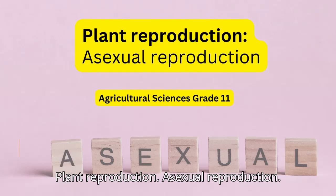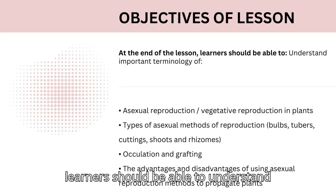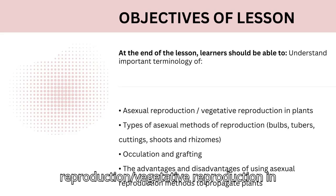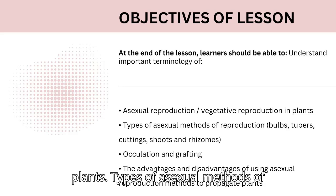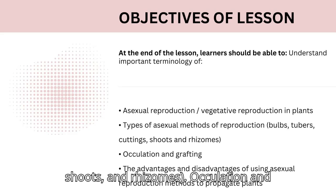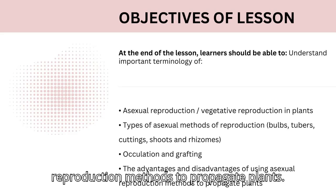Plant reproduction: asexual reproduction. Objectives of the lesson — at the end of the lesson, learners should be able to understand important terminology of asexual reproduction and vegetative reproduction in plants, types of asexual methods of reproduction including bulbs, tubers, cuttings, shoots, and rhizomes, oculation and grafting, and the advantages and disadvantages of using asexual reproduction methods to propagate plants.